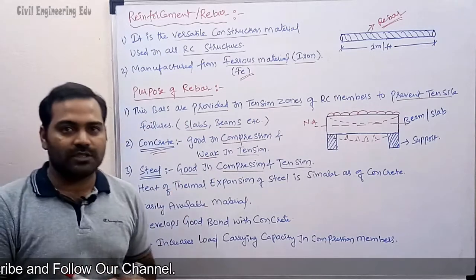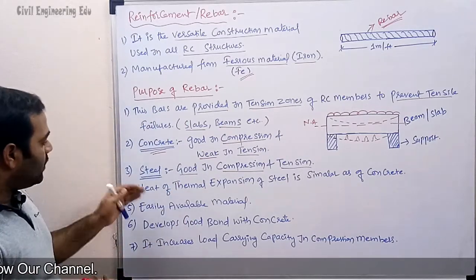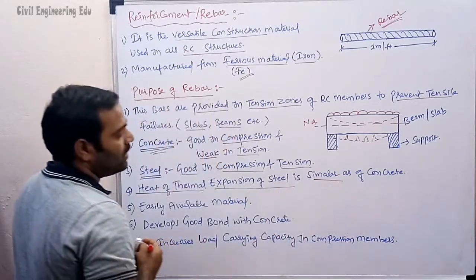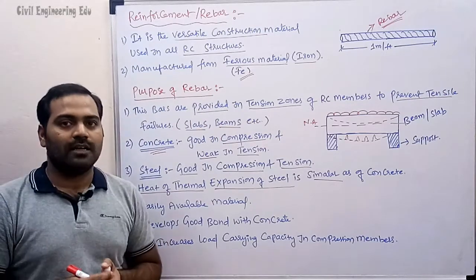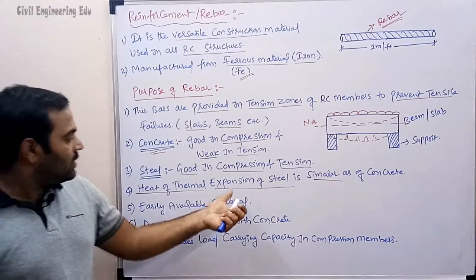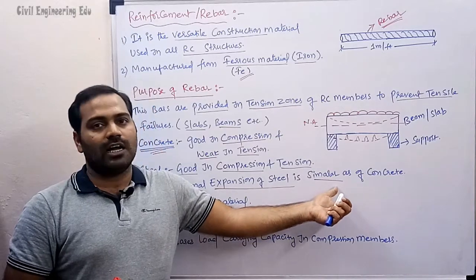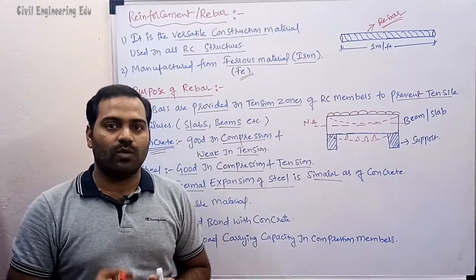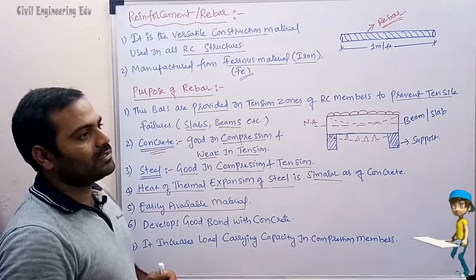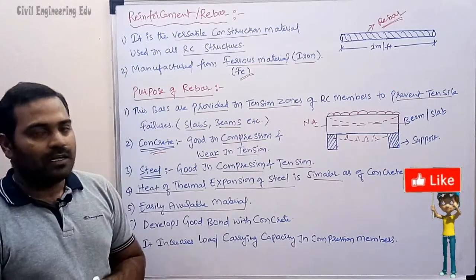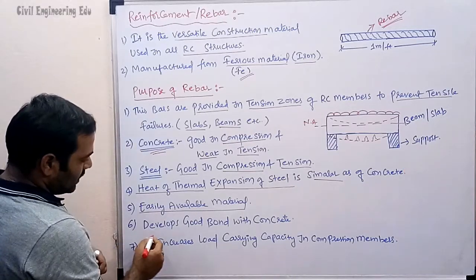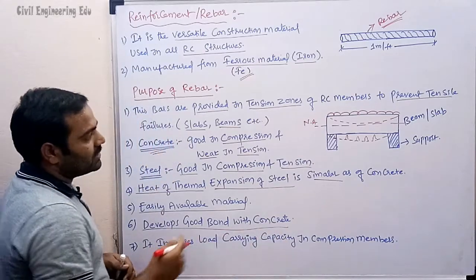Steel is good in both compression and tension — it can take both compressive force and tensile force. Another important point: the coefficient of thermal expansion of steel is similar to that of concrete. This is a key reason why we use steel specifically. Additionally, steel rebar is very easily available and can be supplied in any quantity to any construction project.